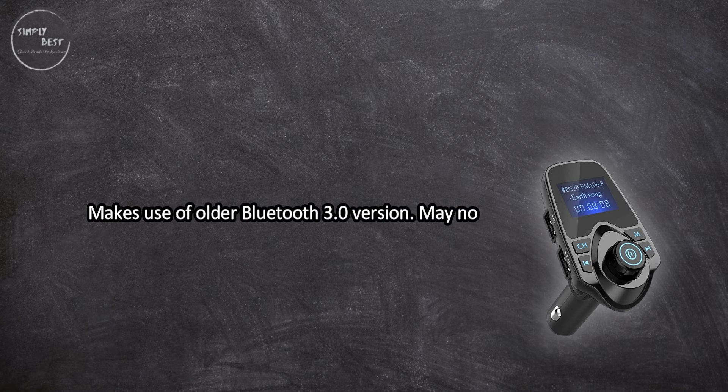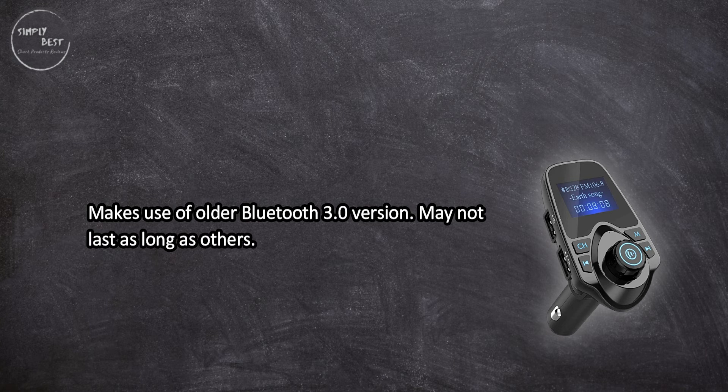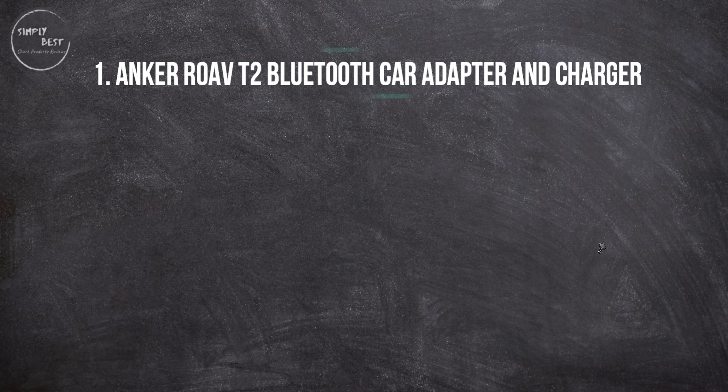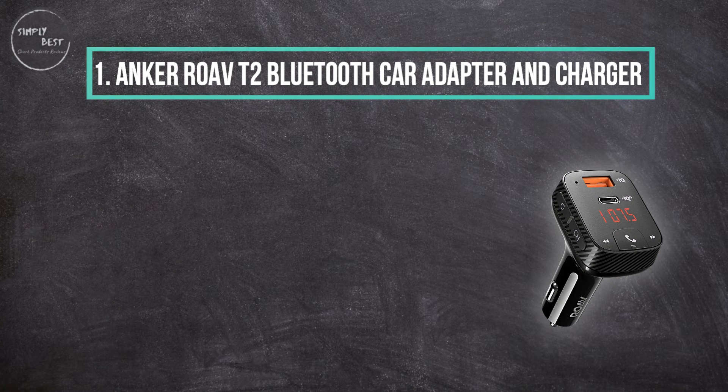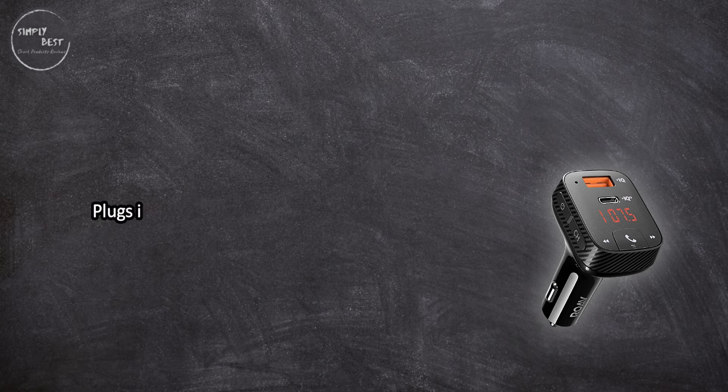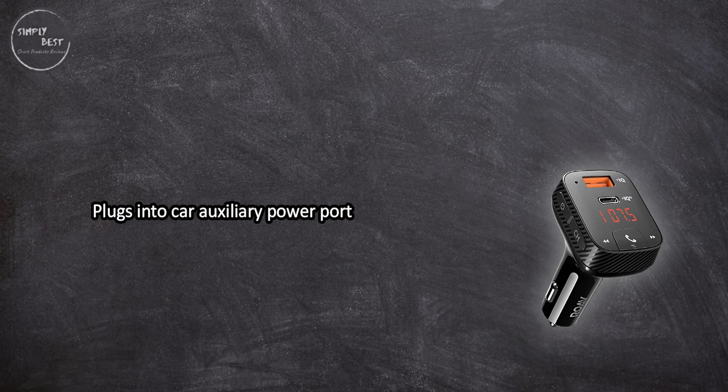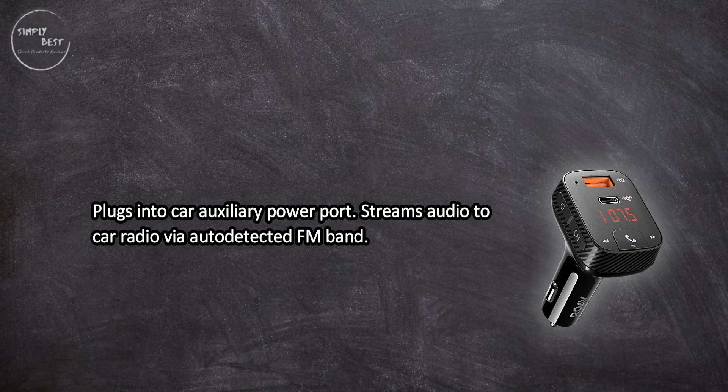At number one, Anker Roav T2 Bluetooth car adapter and charger. Plugs into car auxiliary power port. Streams audio to car radio via auto-detected FM band. Controls music and phone calls with handy buttons.